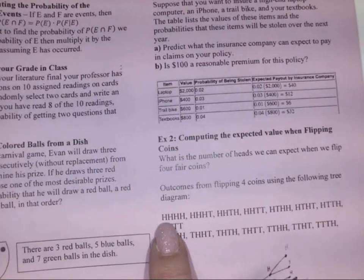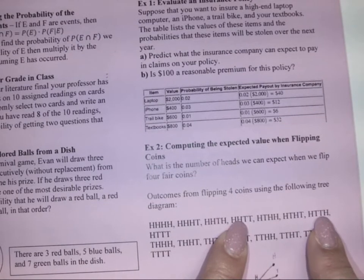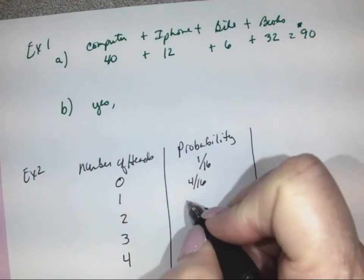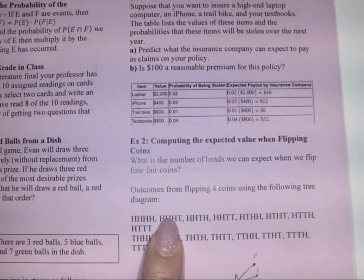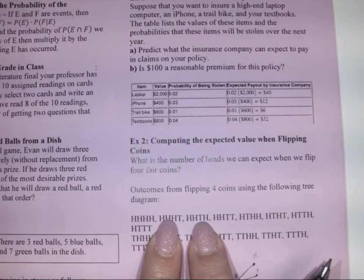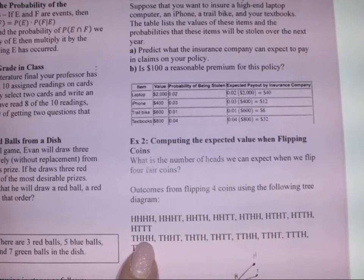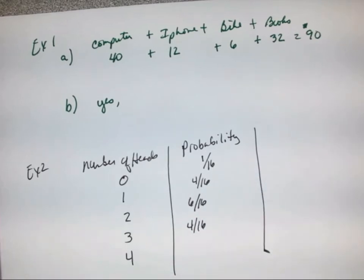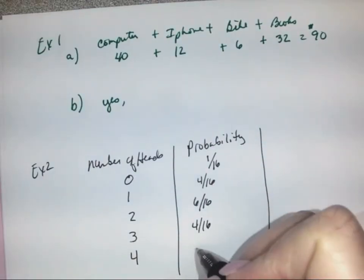For two heads, we find three outcomes in the top half and three in the bottom half of the tree diagram, for a total of 6 out of 16. For three heads, there are four outcomes, so that's 4 out of 16. And for four heads, the only outcome is all heads, so it's 1 out of 16.